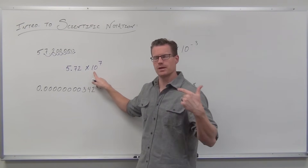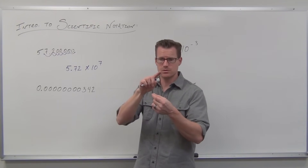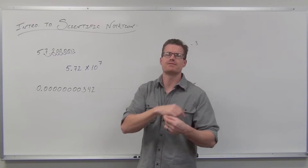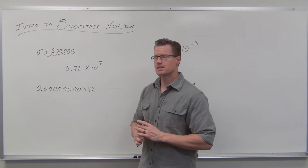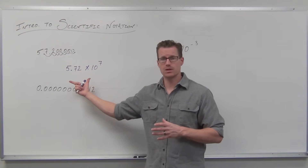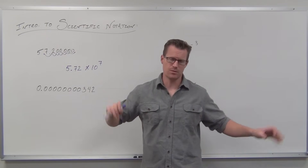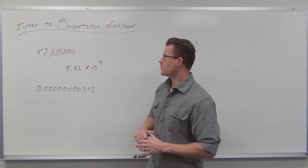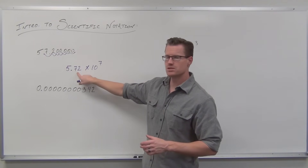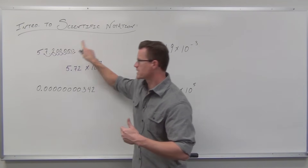That would move the decimal seven places back to the right. Multiply by 10 moves it once; 10 to the third moves it three times; 10 to the seventh would move it seven decimal places. It's just a different way to represent the same number, but something shorter to write. The larger the number, the more useful this becomes — or the smaller the number, the more useful this becomes. So I'm illustrating 57 million with 5.72 times 10 to the seventh power.